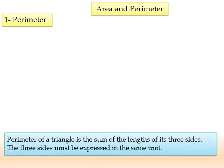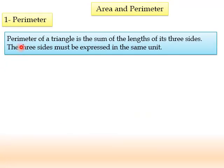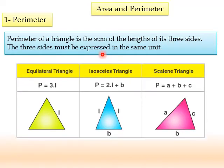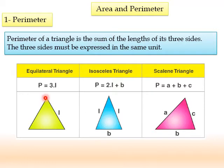Let's talk now about area and perimeter. The perimeter of a triangle is the sum of the lengths of its three sides. Note that the three sides must be expressed in the same unit. From previous years, we know that the perimeter of a polygon is the sum of its side lengths. When we have a triangle, we add the length of the first side, the second side, and the third side — that's how we calculate the perimeter of a triangle.